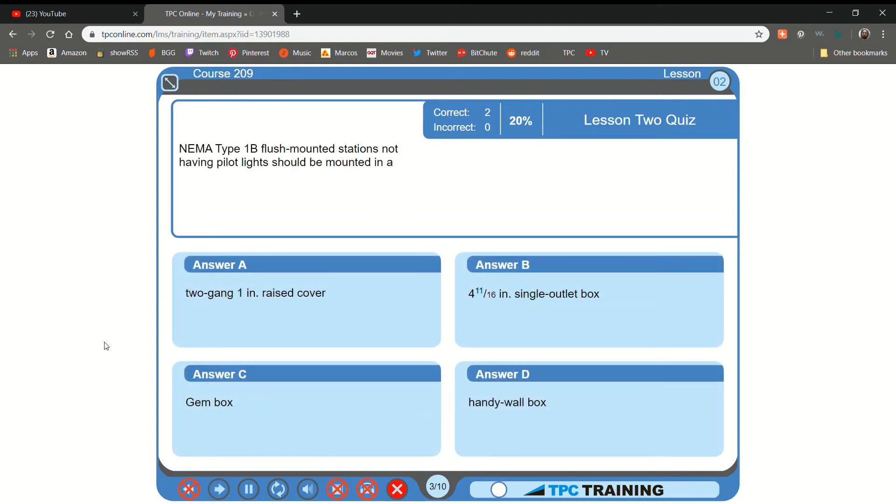NEMA Type 1B flush-mounted stations, not having pilot lights, should be mounted in a... A. Two-gang, one-inch raised cover... B. That is not correct.